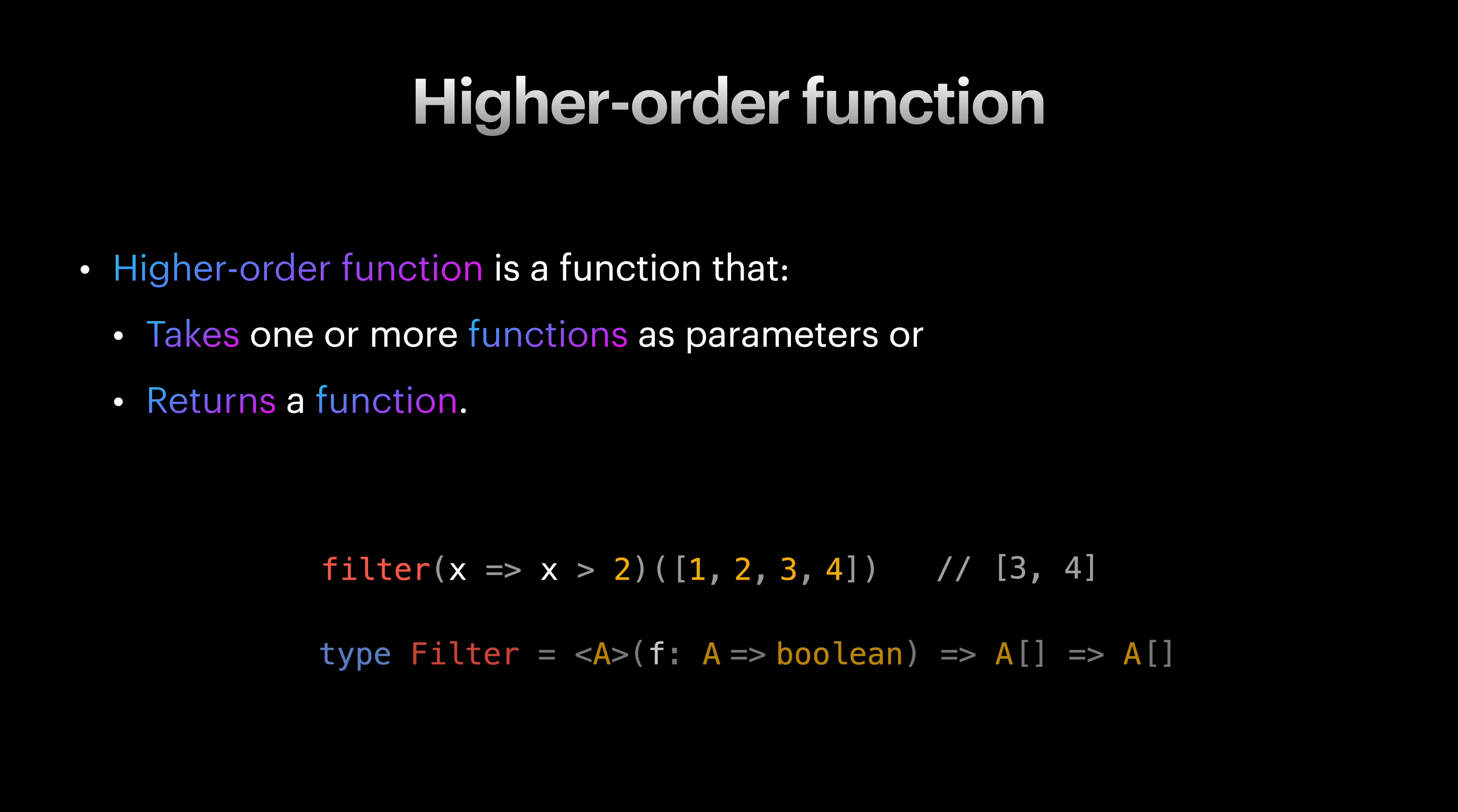The type of filter function looks like this. Filter is an example of higher-order function because it receives a function that maps each value of type A to true and false. This type of input function that checks if some condition holds or not, is called a predicate function.